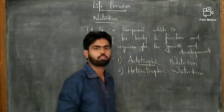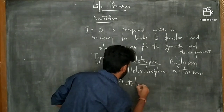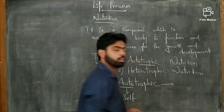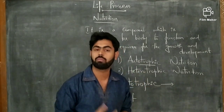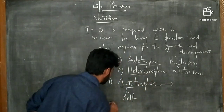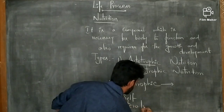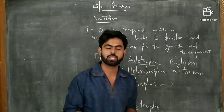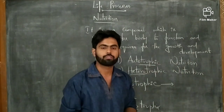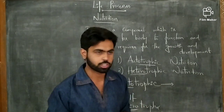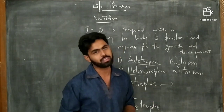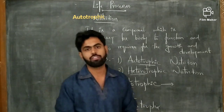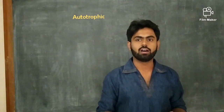Let us understand what is autotrophic nutrition. Auto means self, so it means the nutrition which we synthesize by our own is known as autotrophic nutrition. Hetero means others, so heterotrophic nutrition can be synthesized from other sources. It cannot be synthesized by your own. For example, animals follow heterotrophic mode of nutrition, while plants are autotrophs which synthesize their food with the help of photosynthesis.